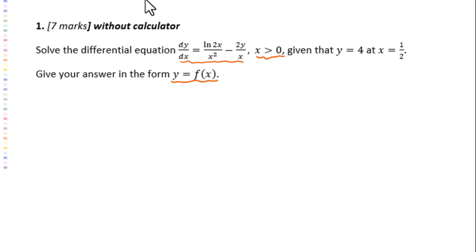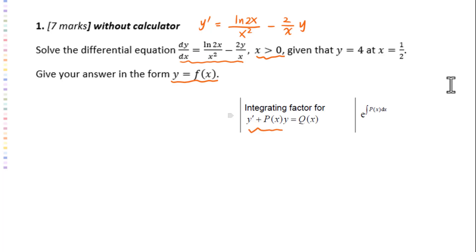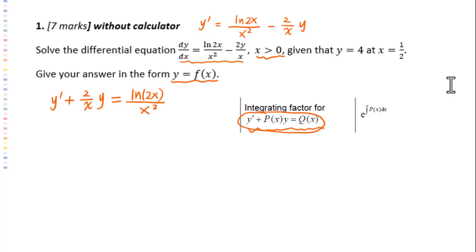This differential equation y prime equals natural log of 2x over x squared minus 2 over x times y. We have a y prime and a y. According to this pattern of differential equation, we can use integrating factor to solve it. Rearranging: y prime plus 2 over x times y equals natural log of 2x over x squared. So P of x equals 2 over x.